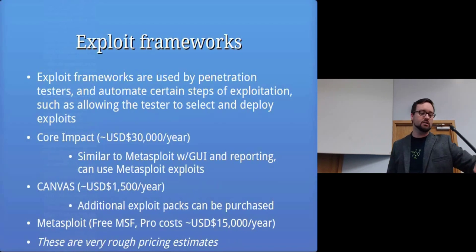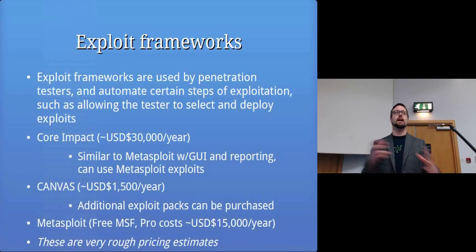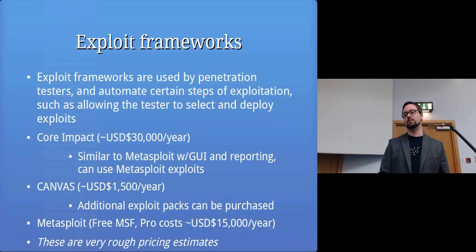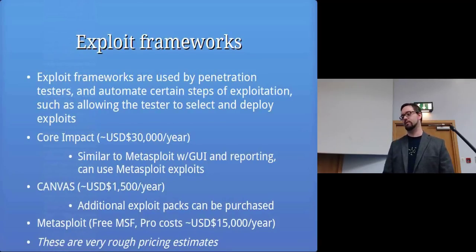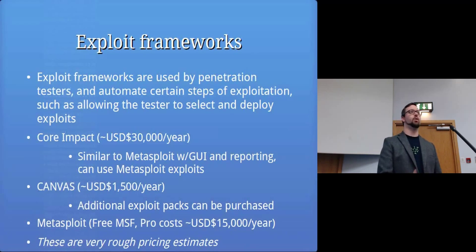Exploit frameworks can be used by pen testers and they make things easier. Instead of having loads of independent exploits you need to fire off separately, the framework has a built-in database. They can be quite expensive — Core Impact costs something like $30,000 a year, and Canvas is another option. Metasploit is free; there's a professional version costing around $15,000 a year, but there's an open-source underlying framework that's free to use, and that's what we're using in this module.